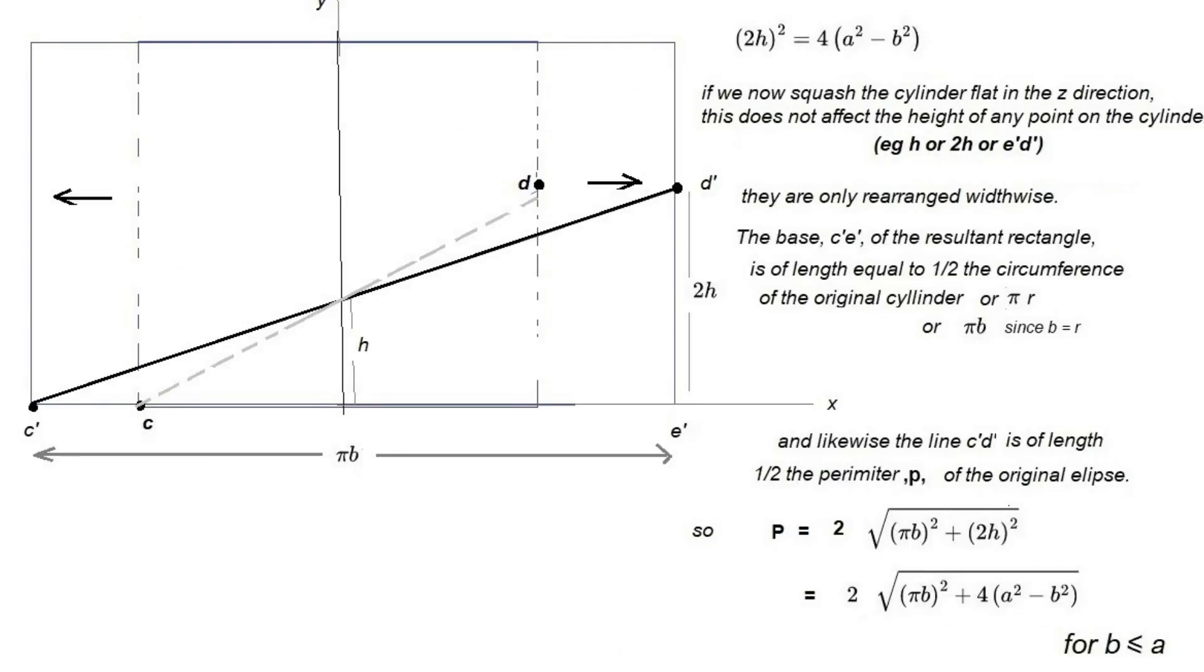If we now squash the cylinder flat in the z direction, this does not affect the height of any point on the cylinder. For example, h, 2h, or e', d' are only rearranged widthwise.